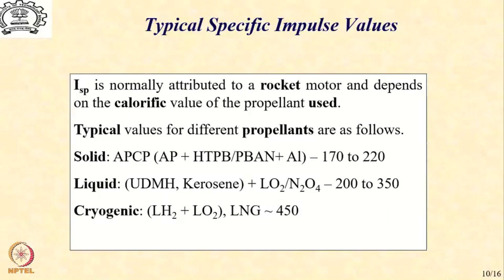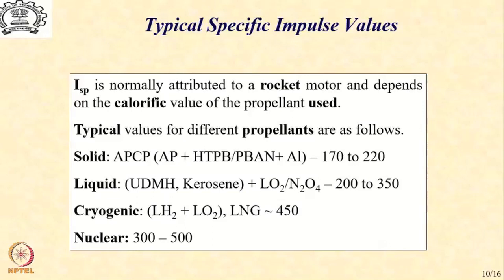When we come to cryogenic engines, it is liquid hydrogen and liquid oxygen that is the most common cryogenic fuel which is used with hydrogen as the fuel and oxygen as the oxidizer. Sometimes liquid natural gas is also used in place of hydrogen, and typical I_sp which are possible with such engines are around 450 seconds. Nuclear propulsion is also used in some applications of launch vehicles and rocket motors, generating I_sp in the range of 300 to 500. With that discussion completed, let us now move over to the model for gravitational force.